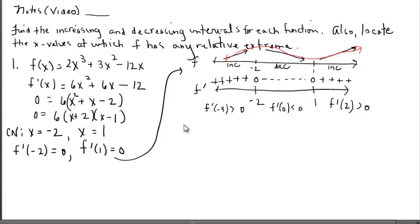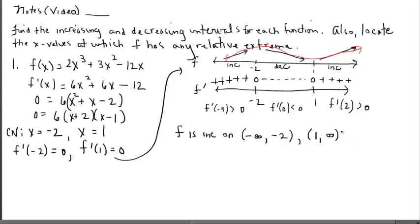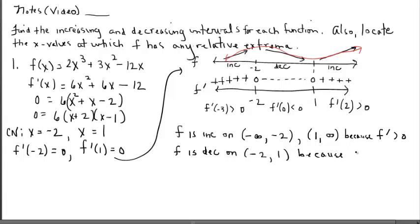Based on our f prime number line, let's respond to what's being asked. The function f is increasing on negative infinity to negative two, and also increasing from one to infinity — because f prime is positive on those intervals. If f is increasing, then f prime must be positive. F is decreasing on the x interval between negative two and one, because the reason a function is decreasing is that the slope is negative.